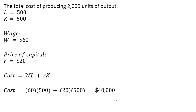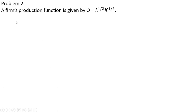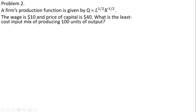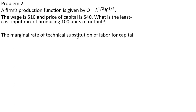Let's move on to example two, with a slightly different production function. The wage is $10, the price of capital is $40, and we want to find the least cost input mix for producing 100 units of output. In this problem, instead of being given the marginal product of labor and marginal product of capital separately, we're given the marginal rate of technical substitution of labor for capital. Technically, the MRTS equals MPL divided by MPK, which simplifies to K over L in this problem.